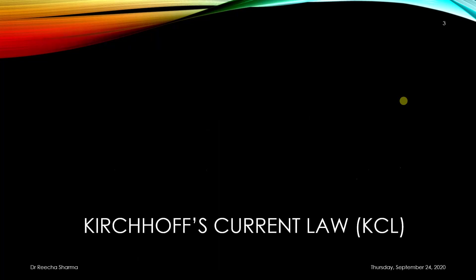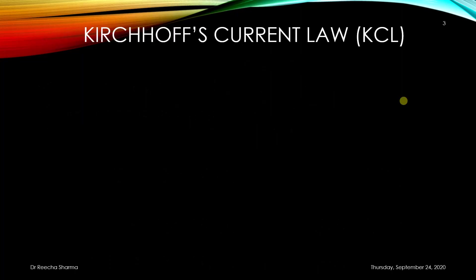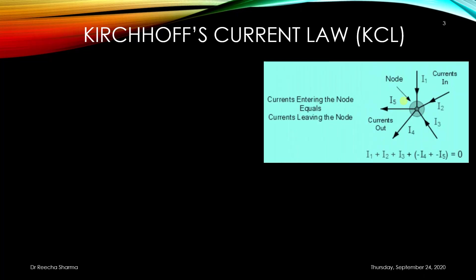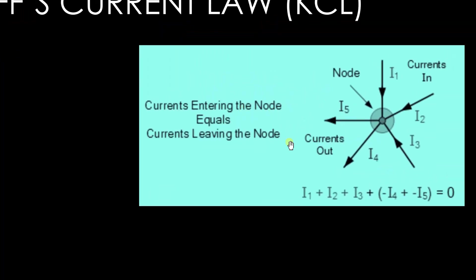First of all, we will discuss Kirchhoff's Current Law, which is also known as KCL or Kirchhoff's First Law. Kirchhoff's First Law tells us that the current entering the node is equal to the current leaving the node. A node is a point where components connect at a point. For example, in this figure, this is a node and the currents are coming and going out from this node.